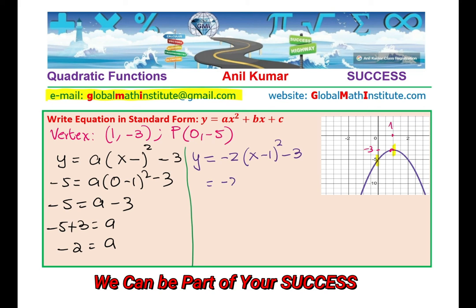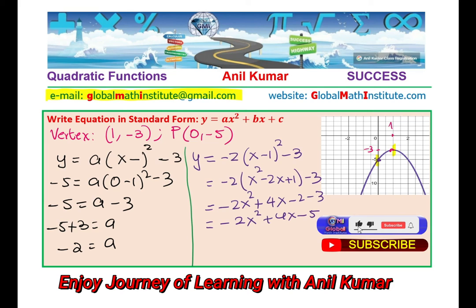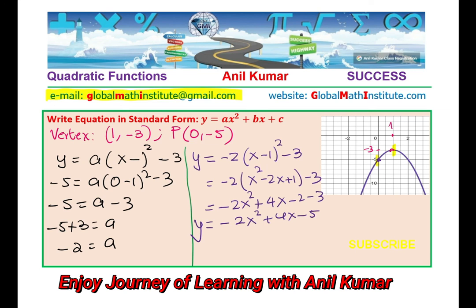With a equals minus 2, we have y equals minus 2 times (x minus 1) squared minus 3. Expanding: minus 2 times (x squared minus 2x plus 1) minus 3 opens to minus 2x squared plus 4x minus 2 minus 3, giving y equals minus 2x squared plus 4x minus 5. Minus 5 is the y-intercept as expected.